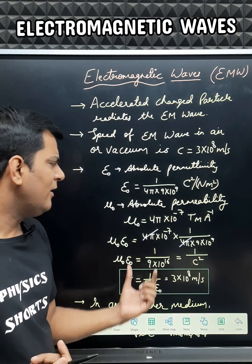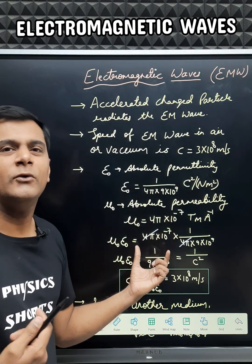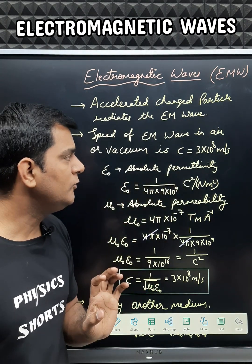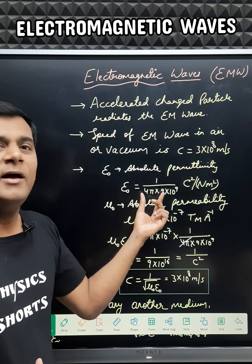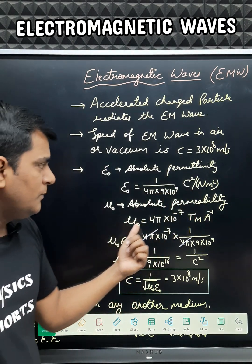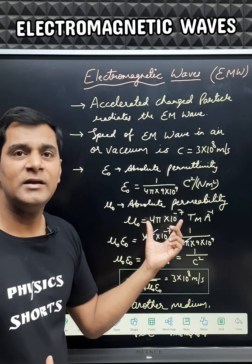This formula can be easily derived using the values of mu_0 and epsilon_0. Epsilon_0 is the absolute permittivity, having the value 1/(4π × 9×10^9). Mu_0 is absolute permeability, having the value 4π×10^-7.